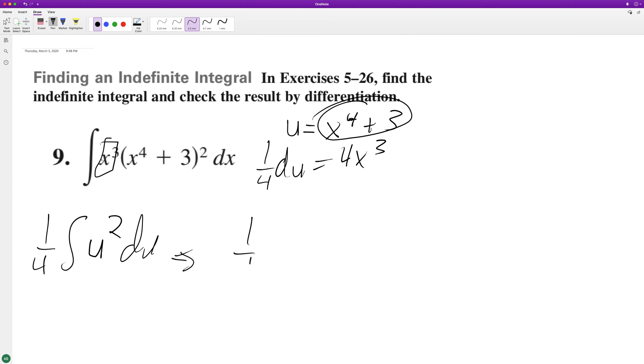So when we integrate, we have one fourth u squared, so u cubed over three. This becomes u cubed over 12 plus c.